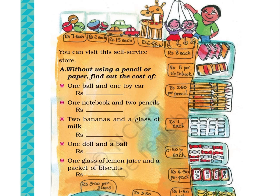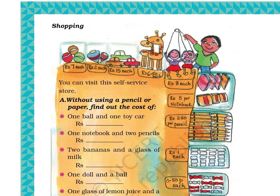Box 2 has 2 spinning tops, price tag Rs. 2 each. Box 3 has 3 toy cars, price tag Rs. 15 each. Box 4 has 2 toy giraffes, price tag Rs. 6.50 each. Box 5 has 2 rope puppets, price tag Rs. 8 each. Box 6 has 7 notebooks, price tag Rs. 5 per notebook. Box 7 has 16 pencils, price tag Rs. 2.50 per pencil.